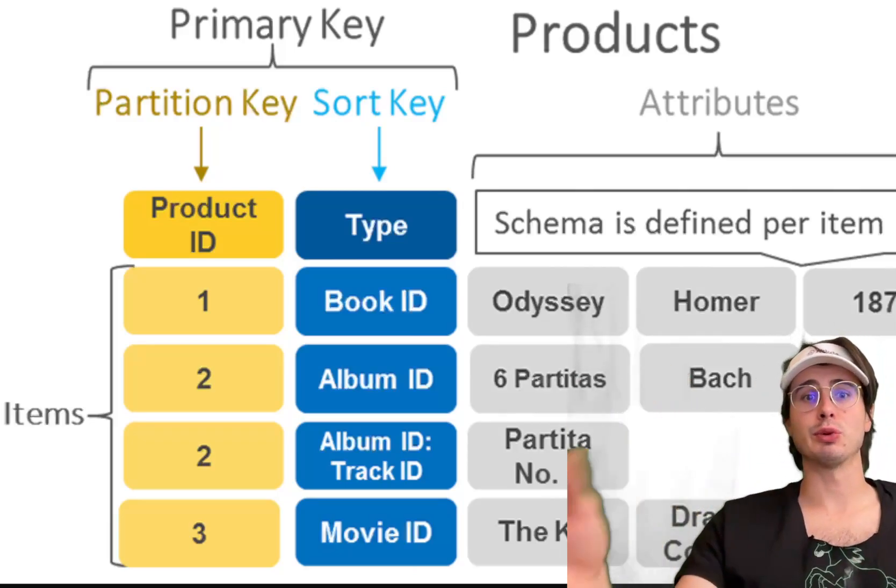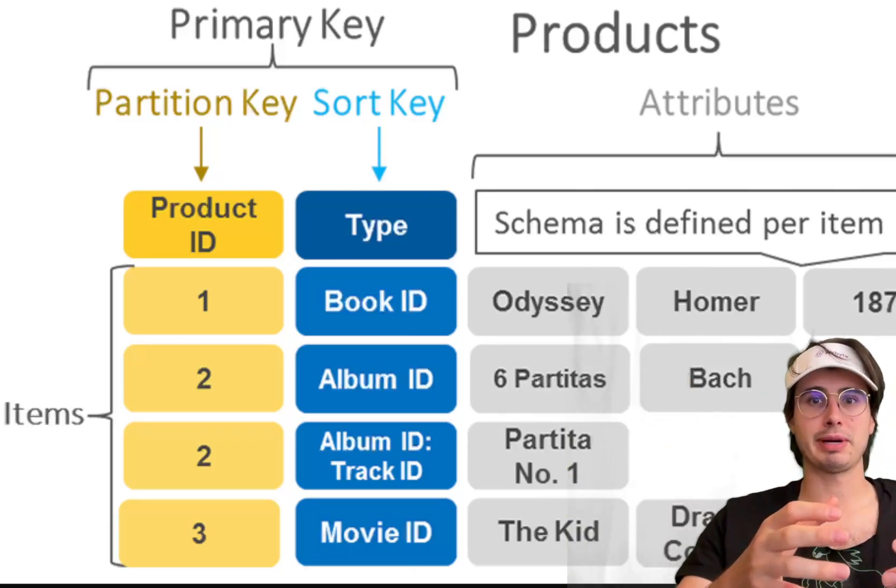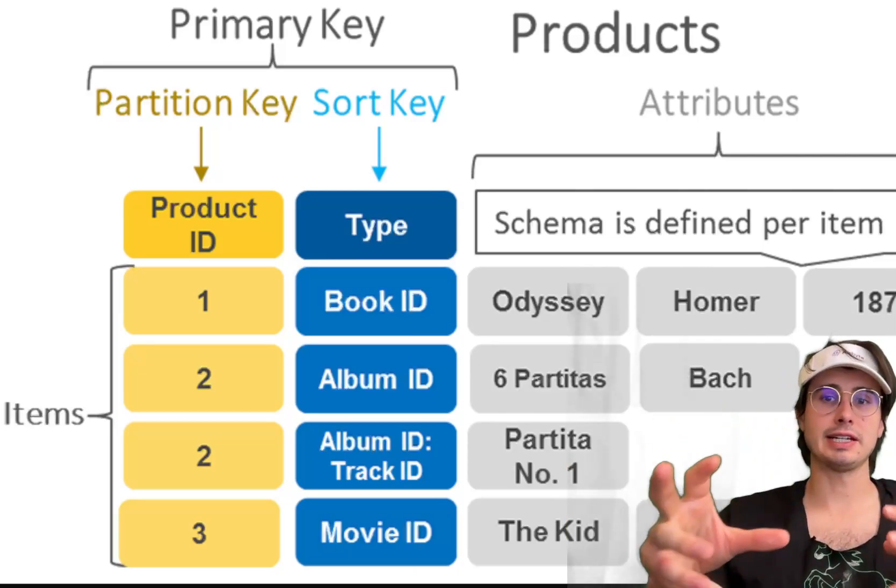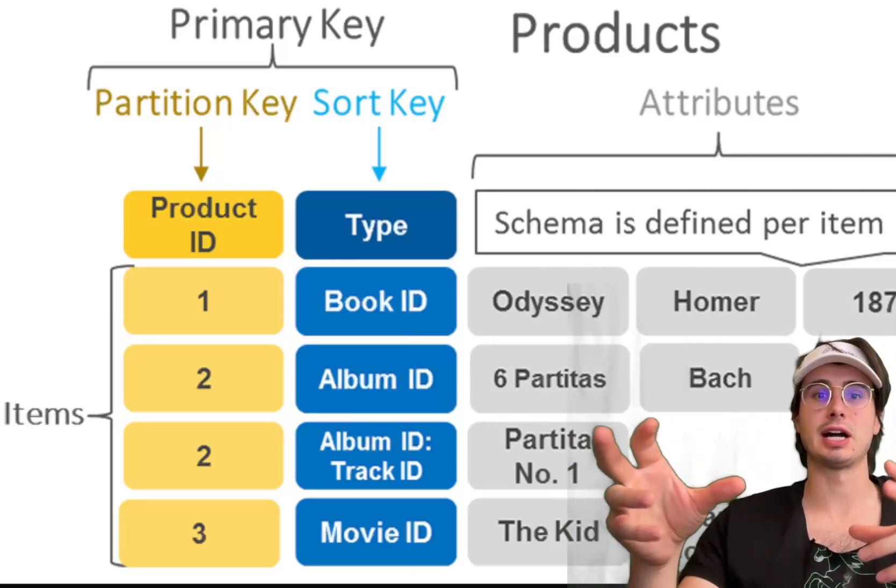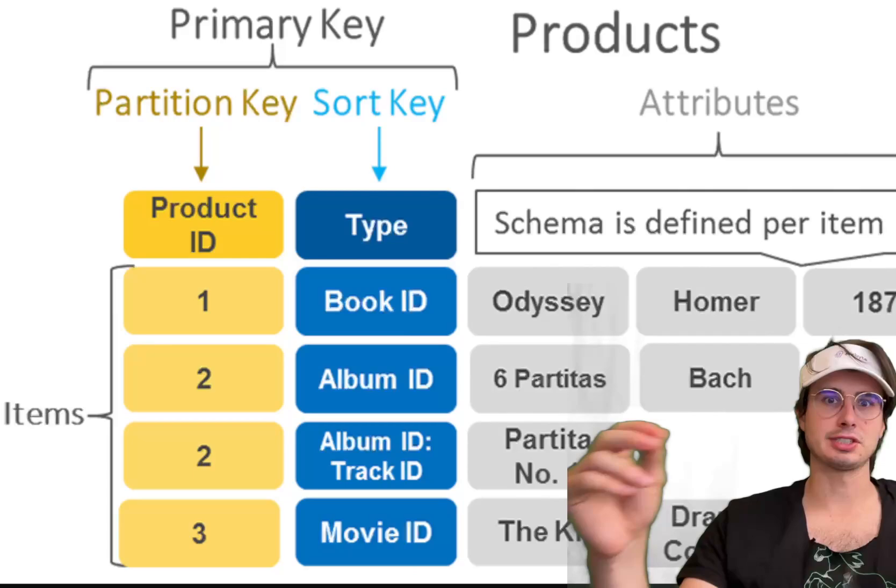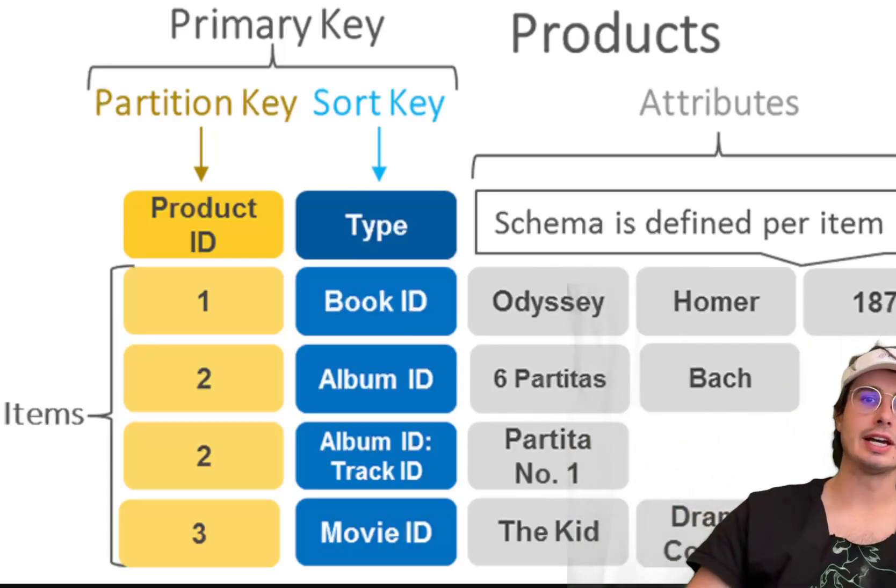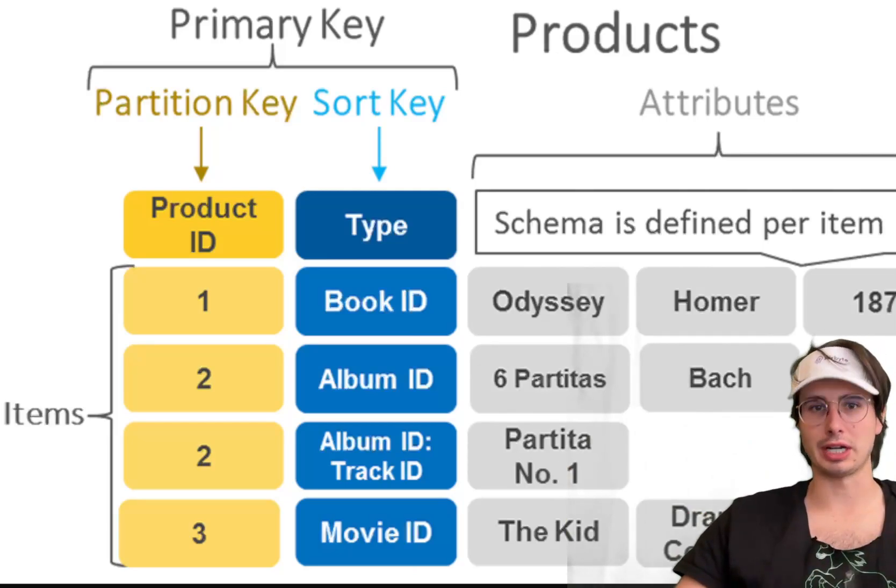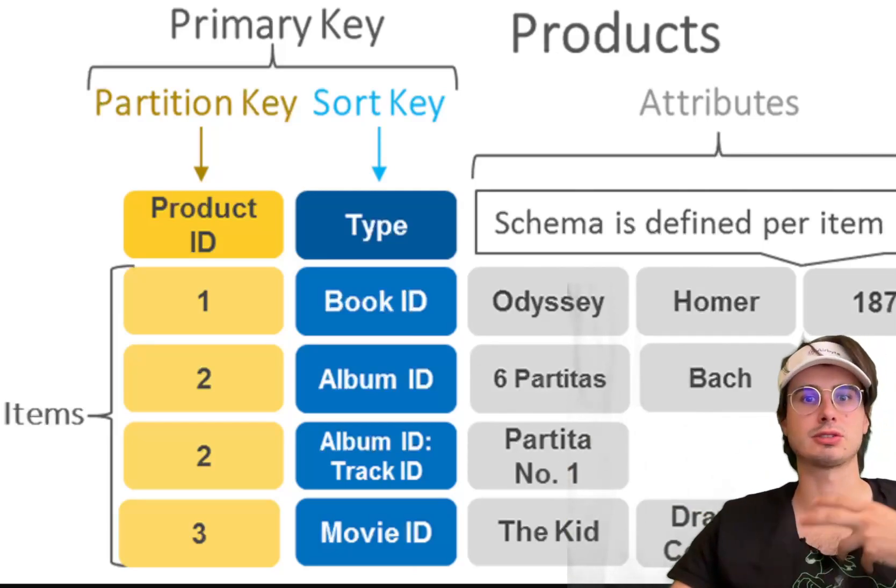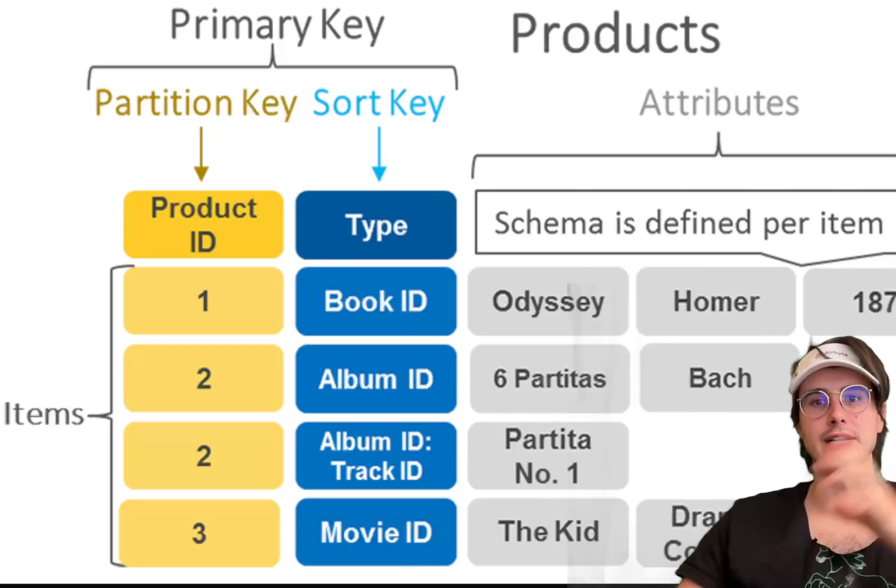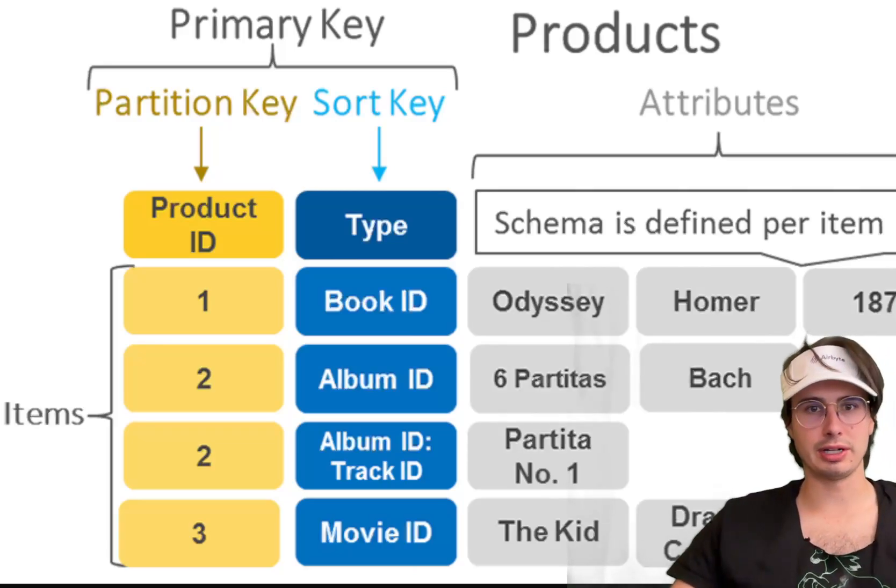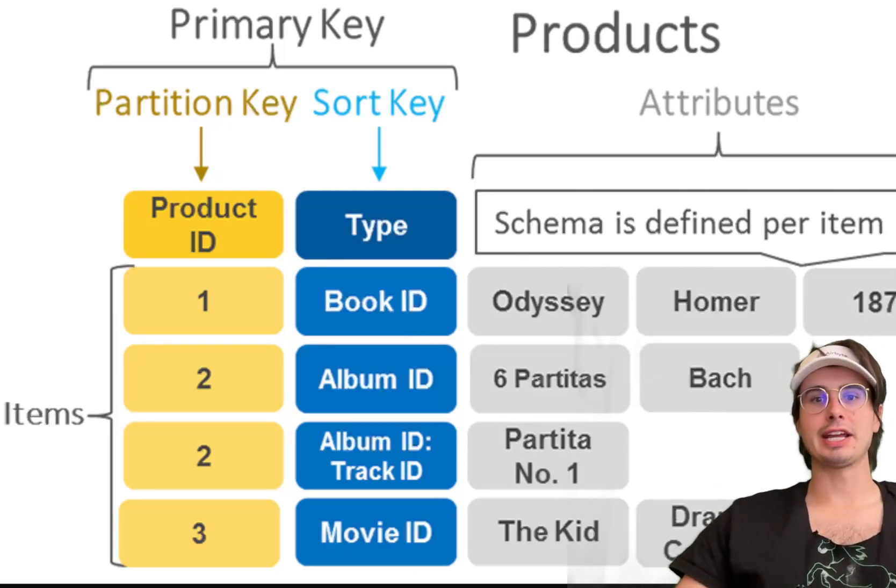The first one I want to talk about is partitioning by key range. This involves dividing data into continuous ranges based on key values. Each partition holds a specific range of keys. Keys from A to M might be stored in one partition but keys from N to Z are stored in another. It's a very straightforward and efficient way to partition for range queries.